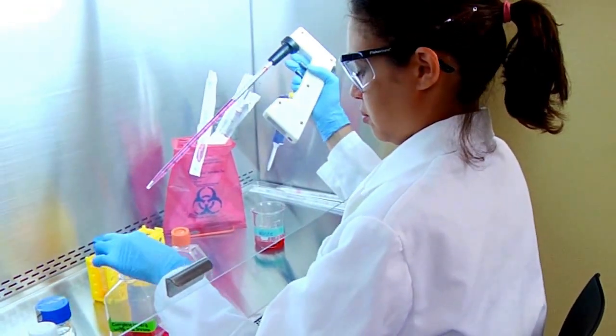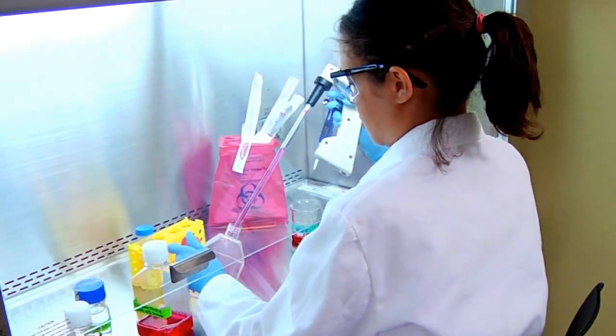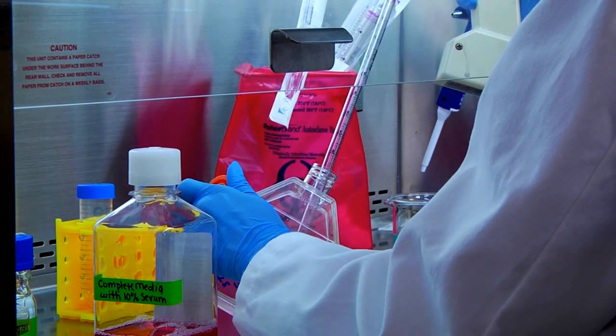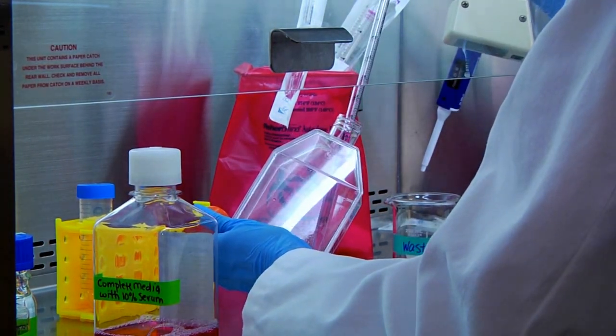Back under the hood, add 7 milliliters of complete culture medium with 10% serum to the trypsinized cells and re-suspend the cells by pipetting up and down several times.